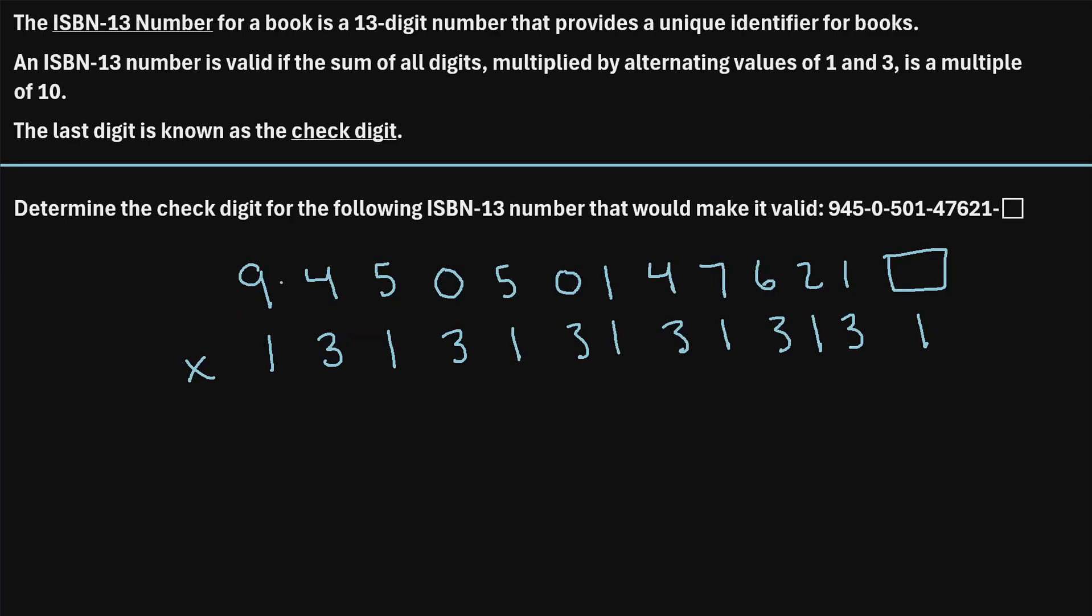So if we perform this multiplication, let's see what we get. 9 times 1, that's 9. 4 times 3, that's 12. 5 times 1 is 5. And we'll just continue in this manner.